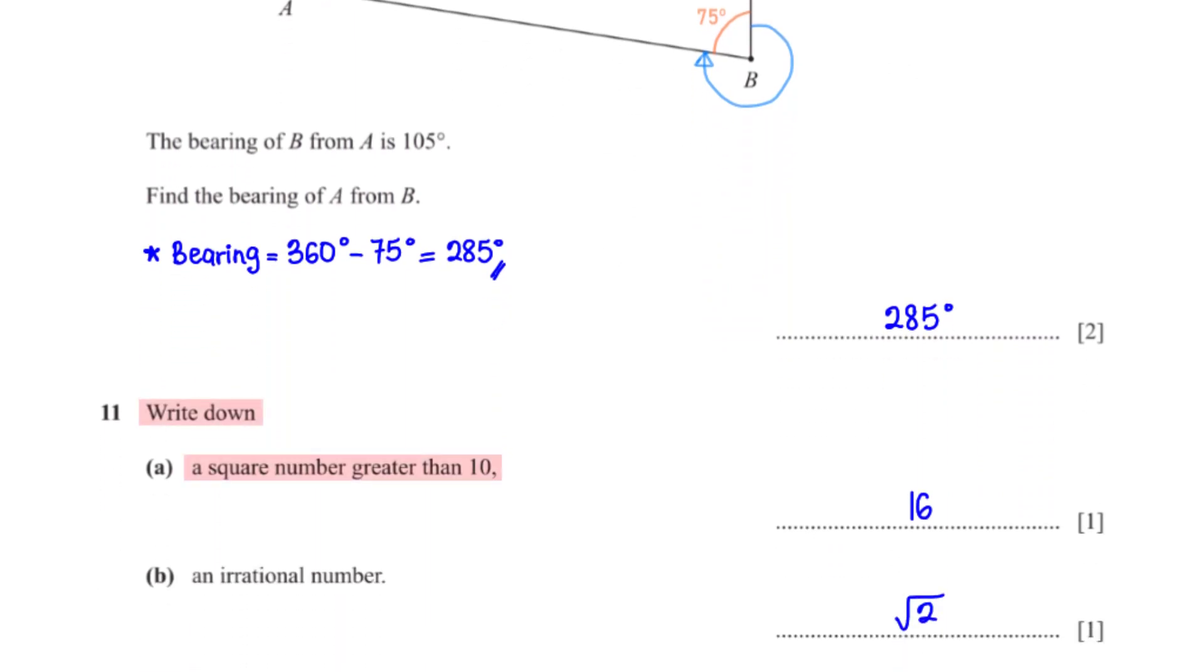Write down a square number greater than 10. One of the square numbers in this range is 16. 4 squared gives us 16. Write down an irrational number. An irrational number is one that cannot be expressed as a fraction. An example of this is root 2.